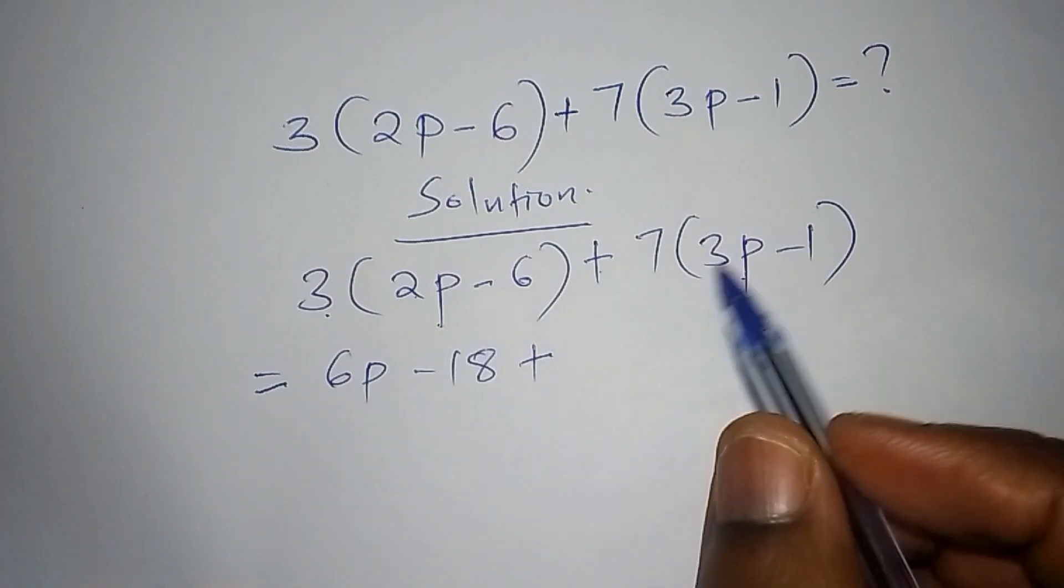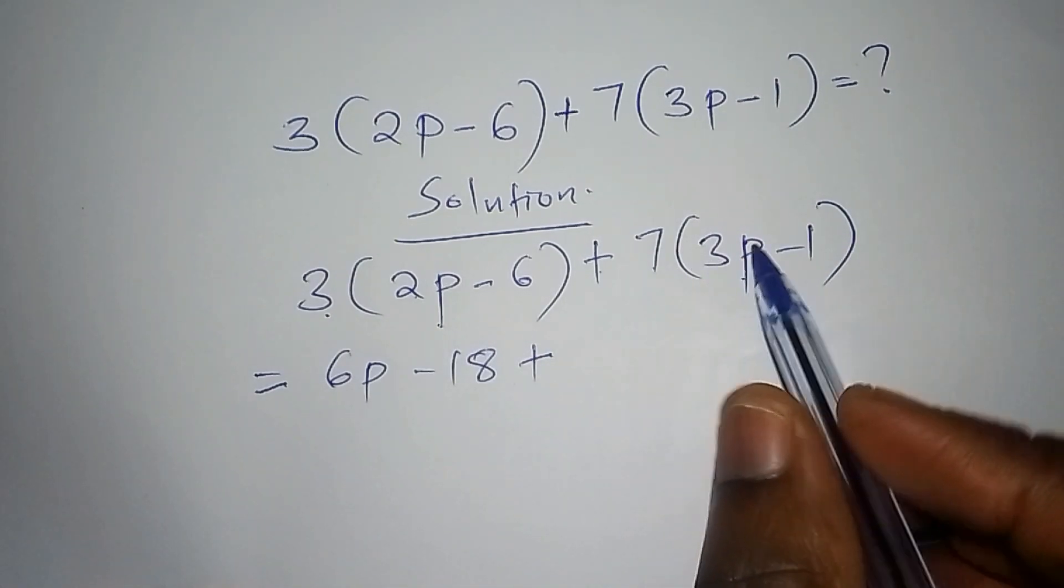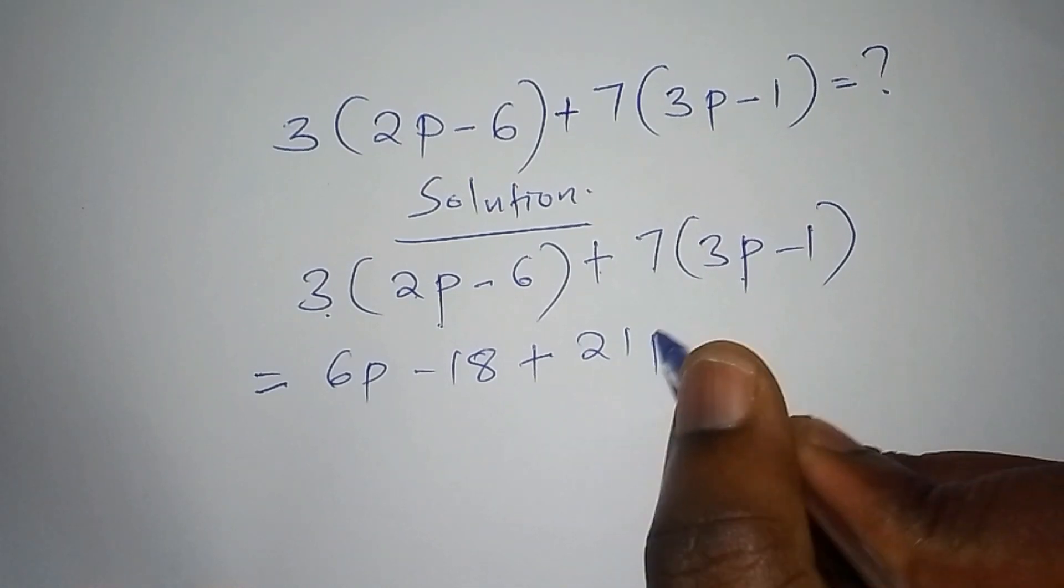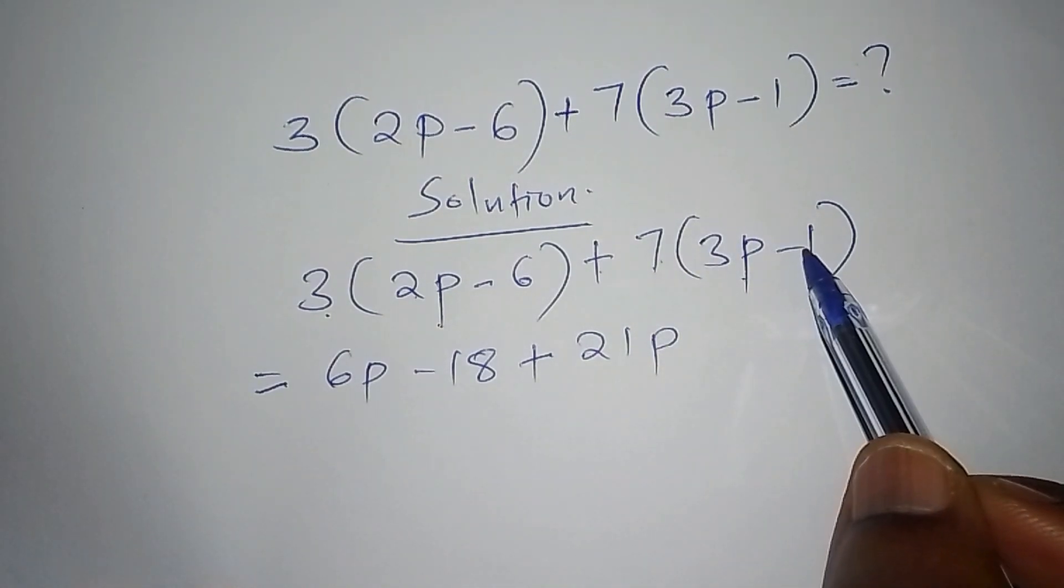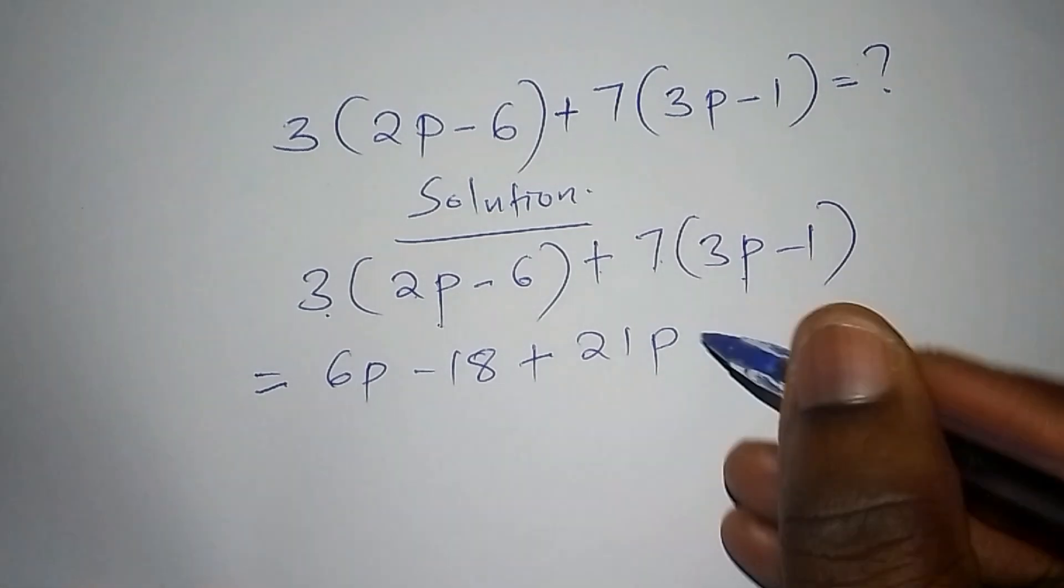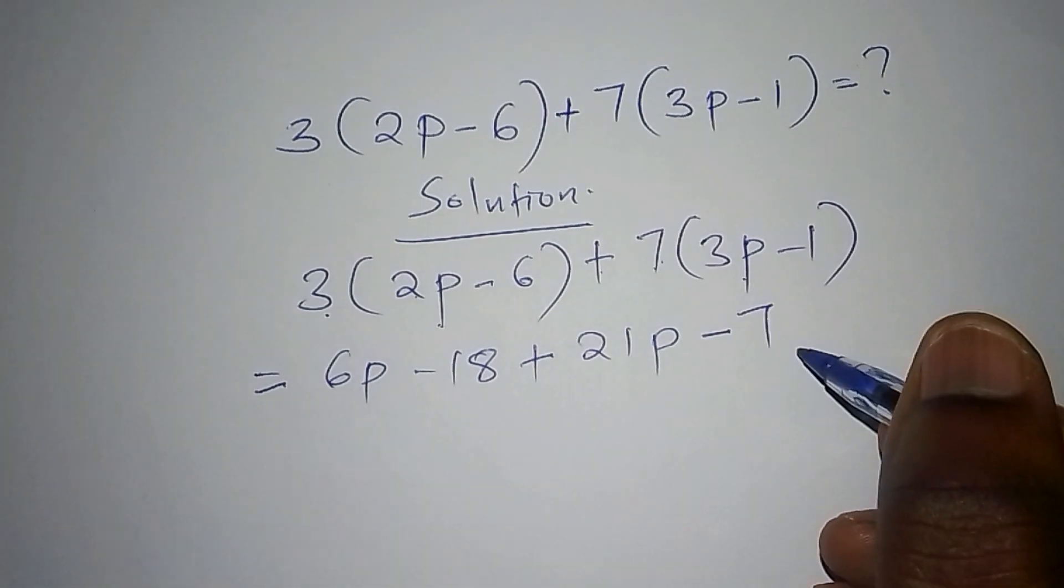We're moving to the second bracket, 7 multiplied by 3p, so we shall have 21, 21p, then we shall also have 7 multiplied by minus 1, so we shall have minus 7.